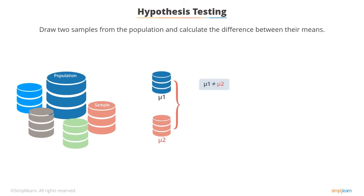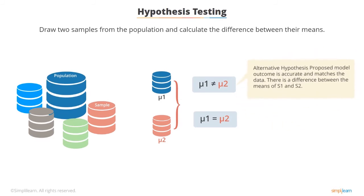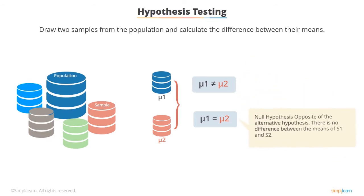Two kinds of hypothesis can be made initially. Alternative hypothesis: this hypothesis indicates that the proposed model outcome is accurate and fits the data — there is a difference between sample data S1 and S2. Null hypothesis: this hypothesis is the logical opposite of the alternative hypothesis and does not support the proposed model. It suggests that there is no difference between sample S1 and S2.